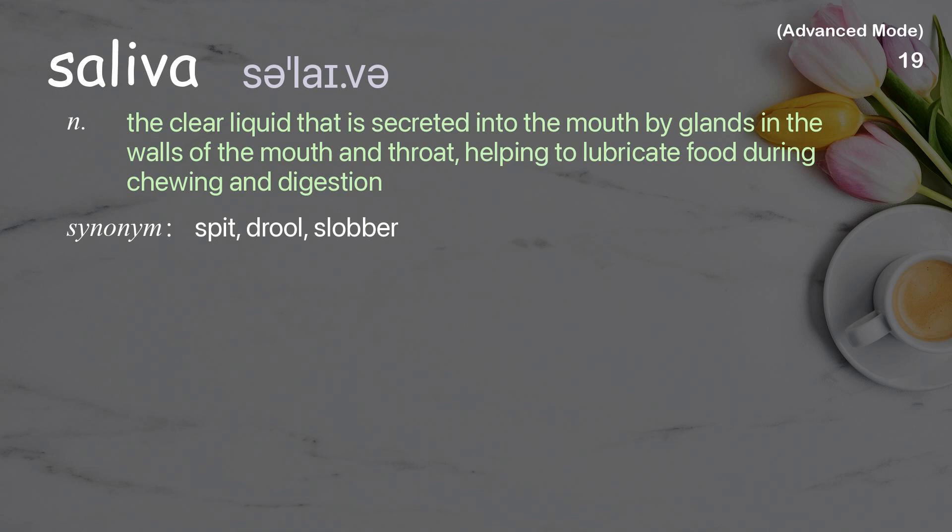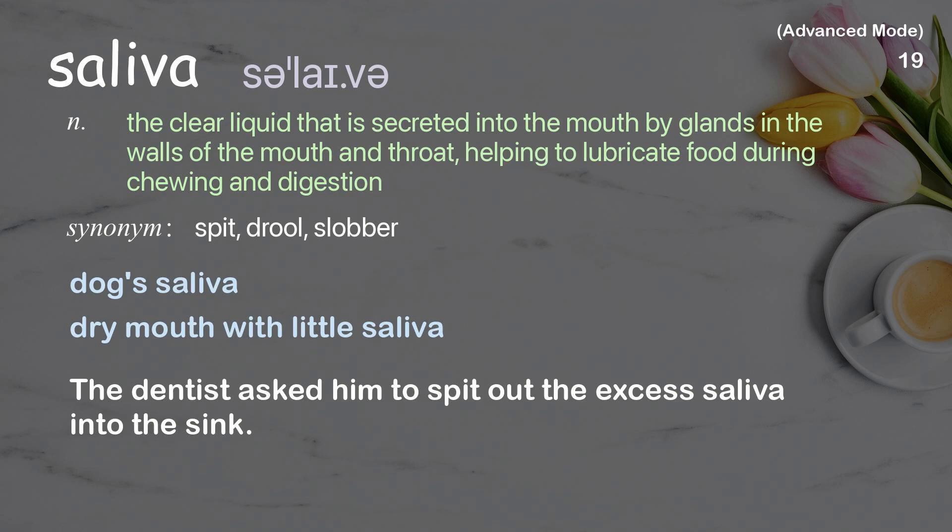Saliva. The clear liquid that is secreted into the mouth by glands in the walls of the mouth and throat, helping to lubricate food during chewing and digestion. Examples: dog saliva, dry mouth with little saliva. The dentist asked him to spit out the excess saliva into the sink.